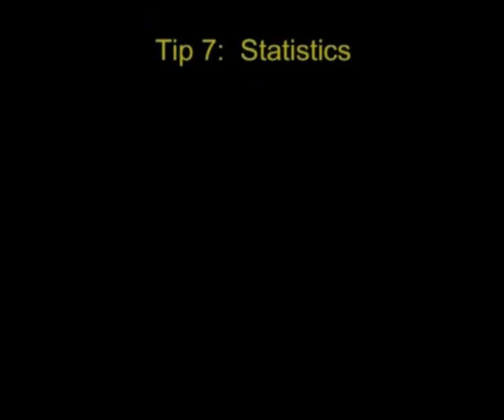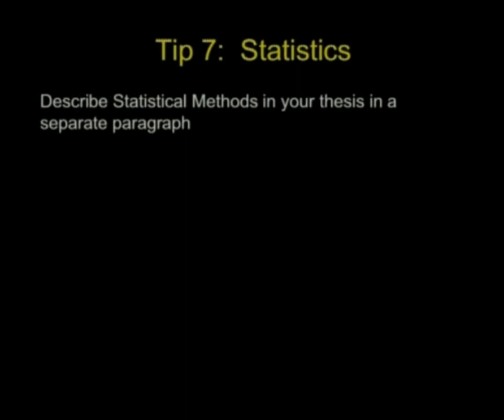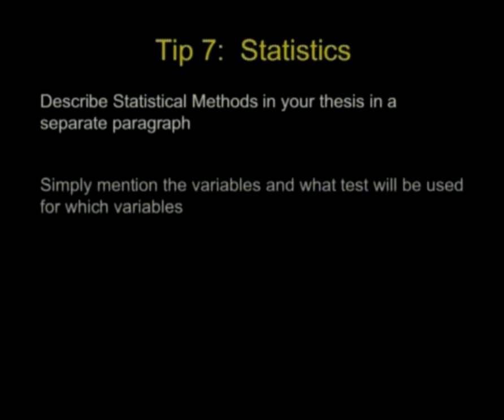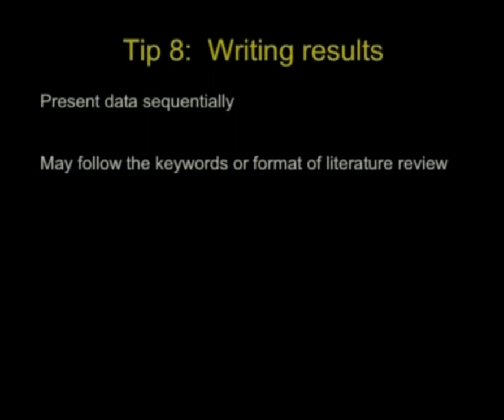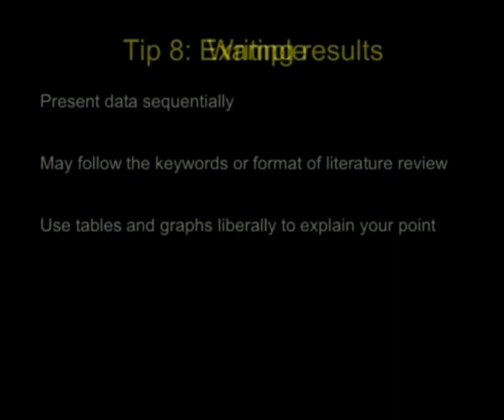7th tip is statistics. I've taken already a lecture on it. But you need to have a statistical method at the end of your material method. Describe what you're going to do. Simply mention what variables, what test. And a statistician checklist that I showed in the last lecture. Writing results. Present data sequentially. Follow the keywords. Keyword format you can follow in review of literature, in results, also in discussion. Use tables and graphs liberally.